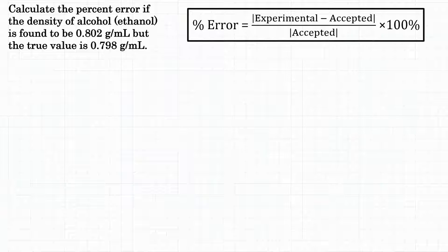Alright everyone, the problem says calculate the percent error if the density of alcohol, specifically ethanol, is found to be 0.802 grams per milliliter but the true value is 0.798 grams per milliliter.